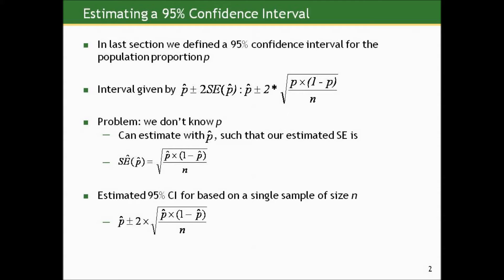Well, we can substitute P-hat in that formula for the standard error to get an estimated confidence interval based on a single sample size n by taking P-hat plus or minus two times the square root of P-hat times one minus P-hat over n.